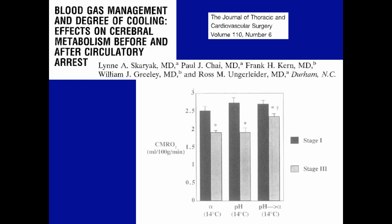A paper from Duke examined the effects of blood gas management strategy and degree of cooling on cerebral metabolic rate recovery. Using alpha stat at 14 degrees showed a significant difference in metabolic rate before versus after circulatory arrest. Using pH stat showed a similar pattern, but a combination of pH stat cooling followed by alpha stat showed a much closer resumption of cerebral metabolic rate — suggesting a superior technique. This was an animal study.